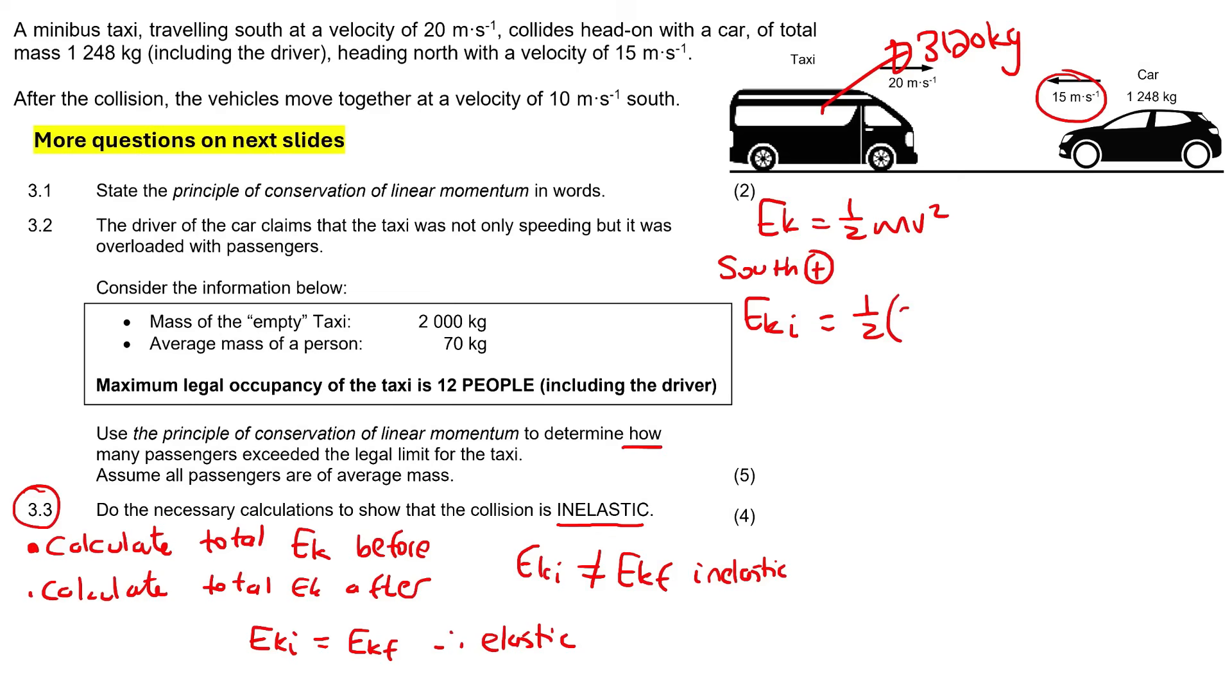So it's going to be a half. Now the mass of the taxi is 3120. The velocity of that taxi was 20. Now the vehicle, or the car, has a mass of 1248, and it was 15. Oh, but I'm going to say minus 15. It doesn't change the answer because it's going to be squared anyways. But we chose south as positive. Now if you go calculate all of this, you get 764,400 joules.